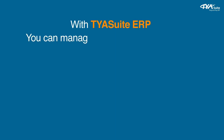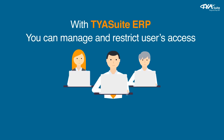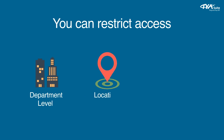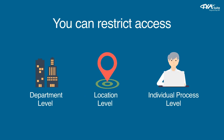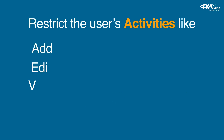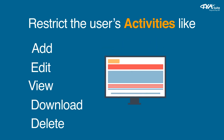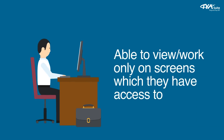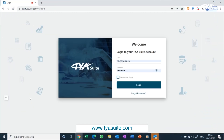With TYASuit ERP, you can manage and restrict users' access at the lowest possible level in your company. You can define your customized user roles. For example, you can restrict access at department level, location level, or individual process level. You can further restrict the user's activities like add, edit, view, download, delete, etc. for each screen. Users will be able to view and work only on screens which they have access to. Each user will be given a unique login ID and password, and they can log in to the ERP using the same.